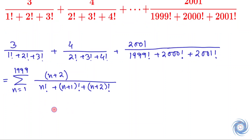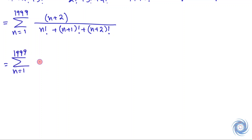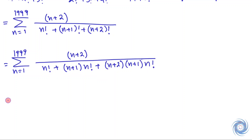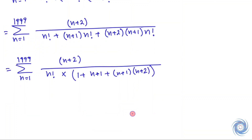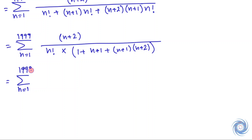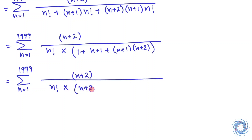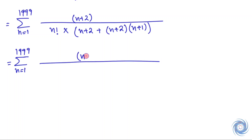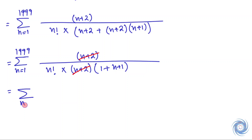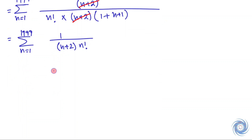From here we simplify the nth term. Now let us multiply the numerator and denominator by (n plus 1). So from here we have the simplified expression for the nth term.